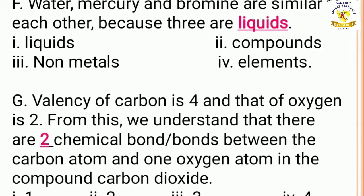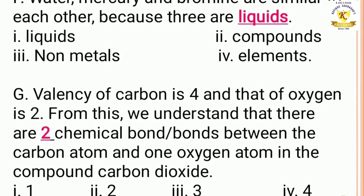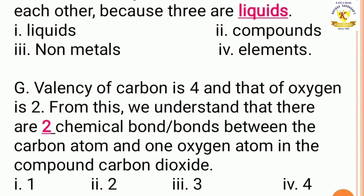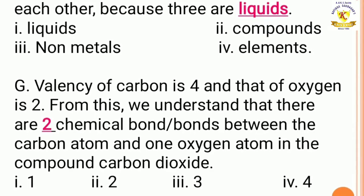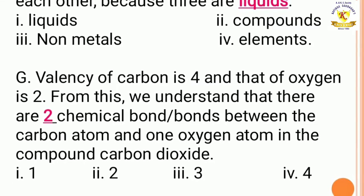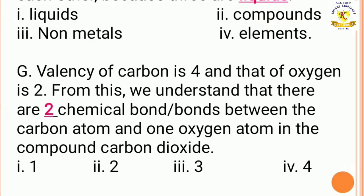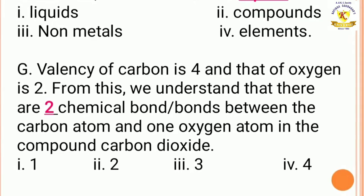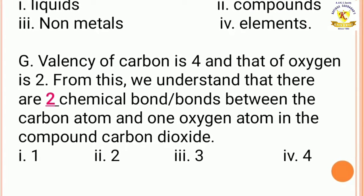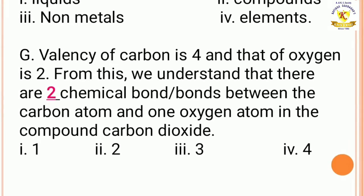Valency of carbon is 4 and that of oxygen is 2. From this we can understand that there are blank chemical bonds between one carbon atom and one oxygen atom in the compound carbon dioxide. The answer is 2 from the given options. Understood?